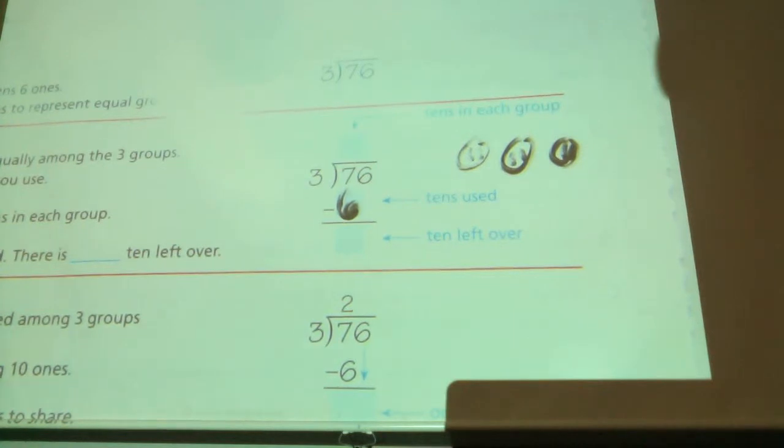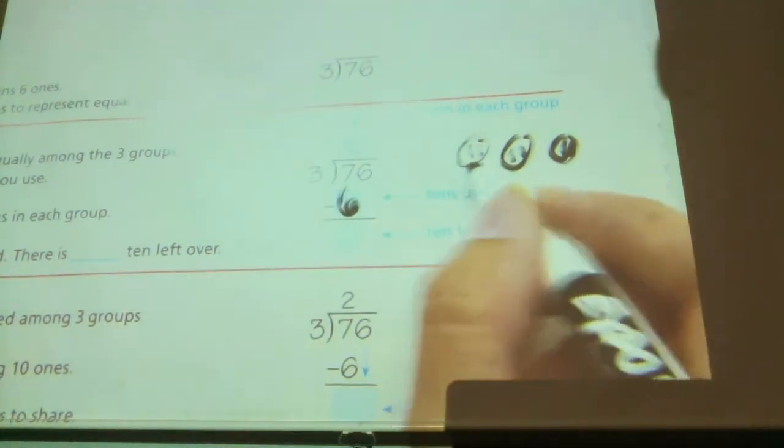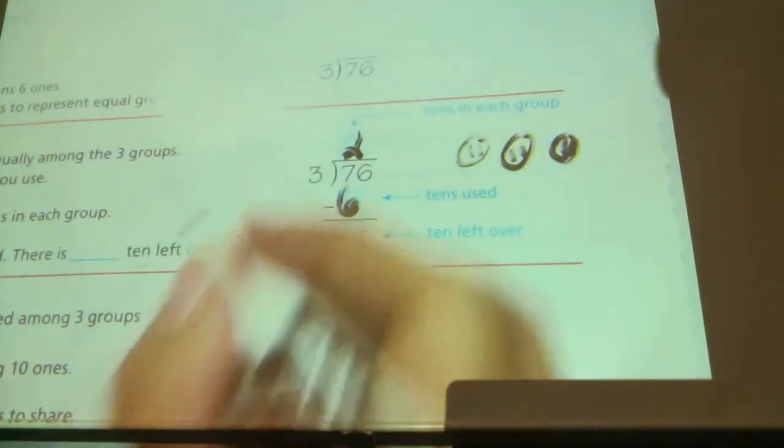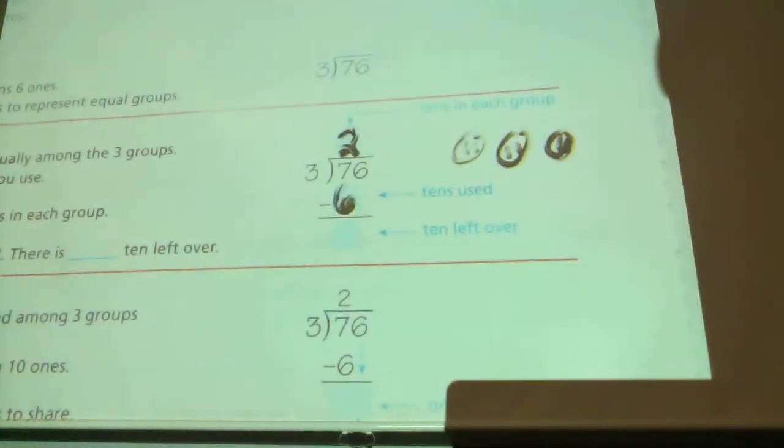How many are in each group? How many ten sticks do I have in each group? Two. Yes. I have two in here, two in here, two in here. So by dividing them into groups, I have two in each group.